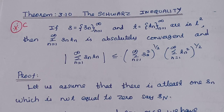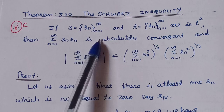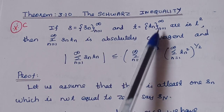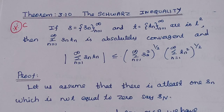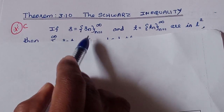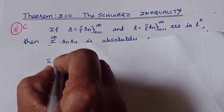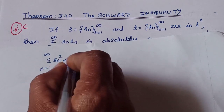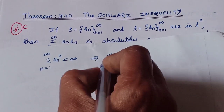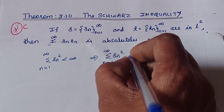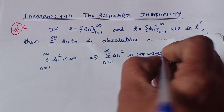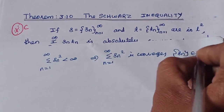State and prove the Schwarz inequality in L2 — this is a university 10-mark question. We have the statement: if S = {Sn} from n=1 to infinity and T = {Tn} from n=1 to infinity are both in L2, meaning summation n=1 to infinity of Sn squared converges and the sequence Sn belongs to L2, then the summation SnTn is absolutely convergent.